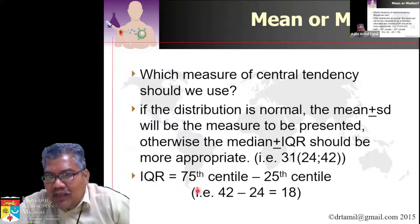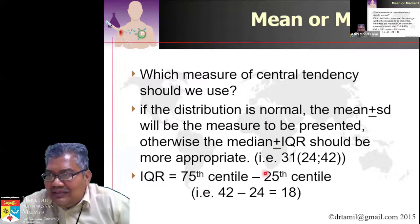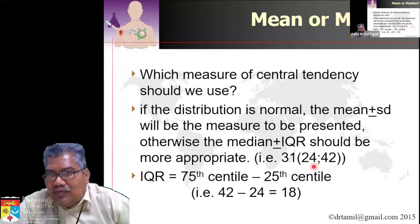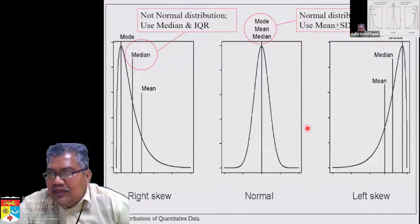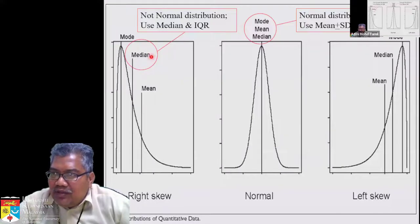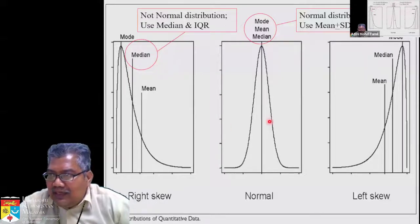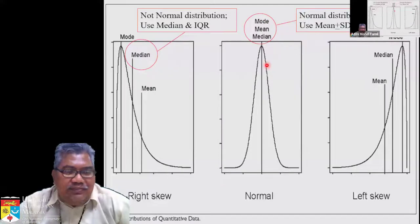The IQR is the difference between the 75th centile and the 25th centile. Personally I find that just reporting the IQR doesn't tell you much, so I usually leave the original values — the 25th centile and 75th centile separately. If the mean and median are very different, it is not a normal distribution and we use the median. If mean, mode, and median are the same, it is normally distributed and we use the mean and standard deviation.